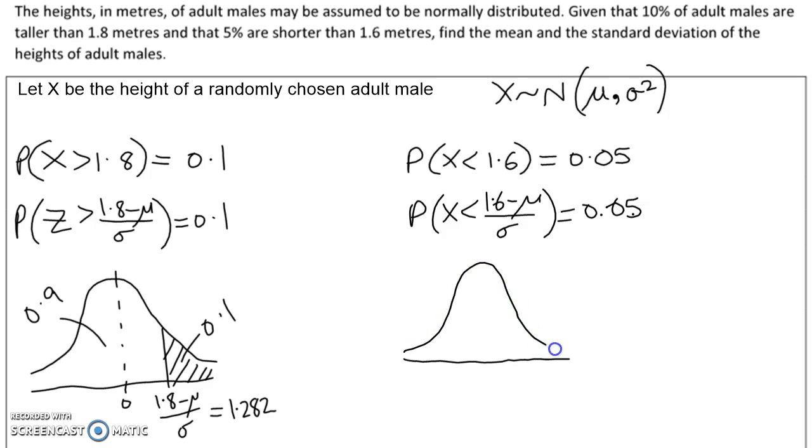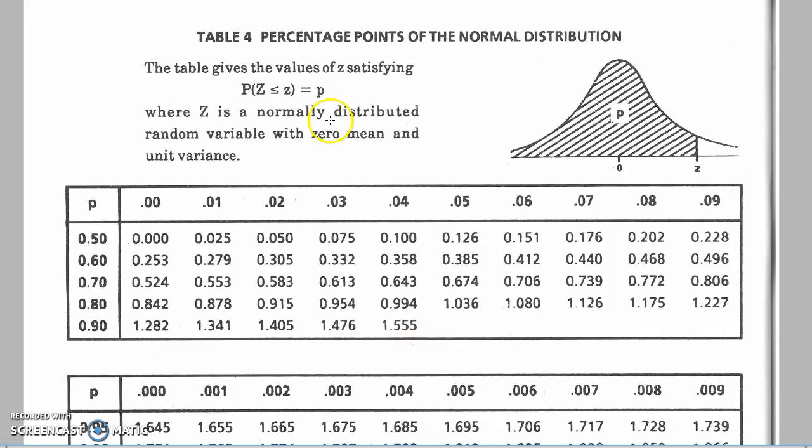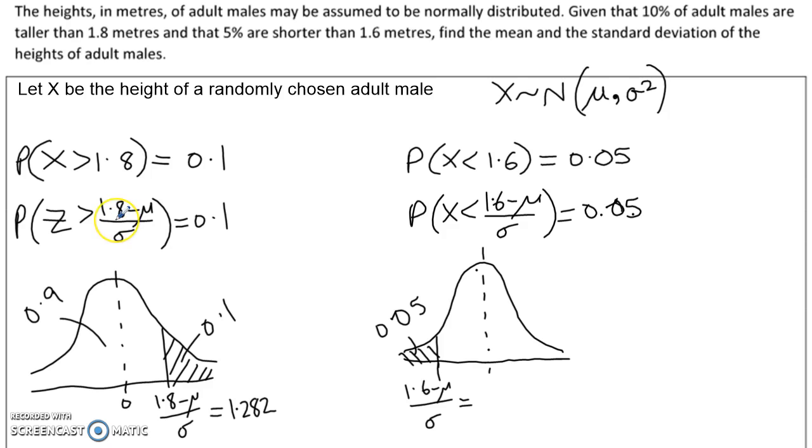Same procedure over here. Less than this z value is really small, 0.05. Because it's less than a half, it must be on the left-hand side, so that little area is 0.05. This z value is 1.6 take mu over sigma. However, in the tables, the probabilities don't get as small as 0.05 - the smallest probability is 0.5. So we're going to use the symmetry of the normal distribution here and look at the other side, where that area is 0.05. This value here is going to be minus 1 times this z value.